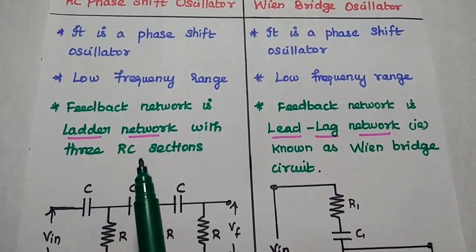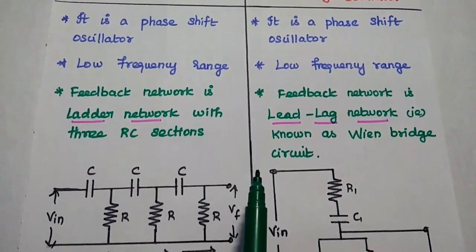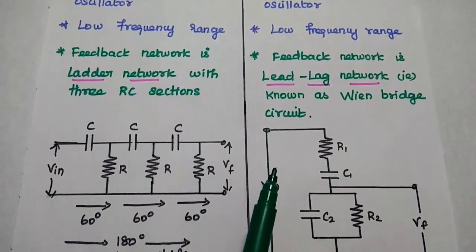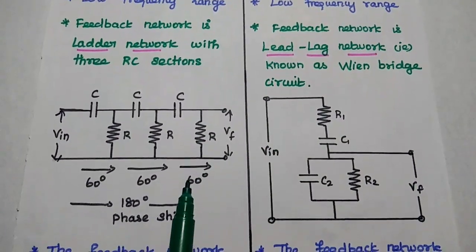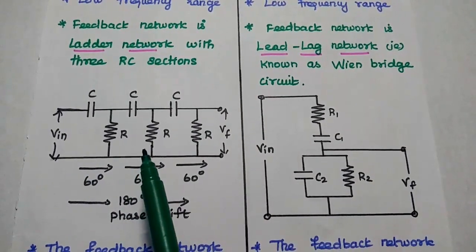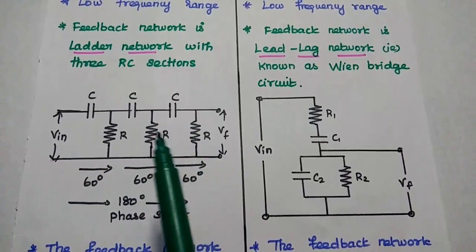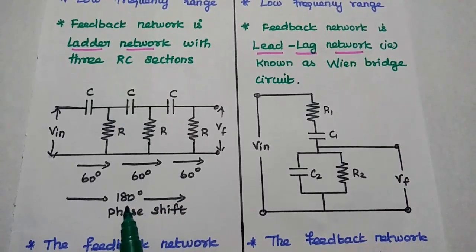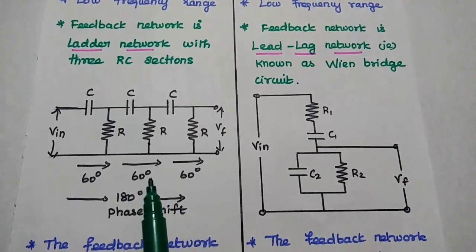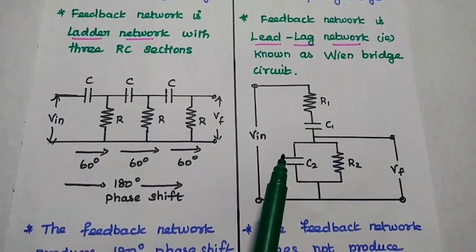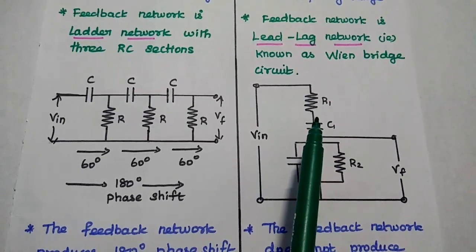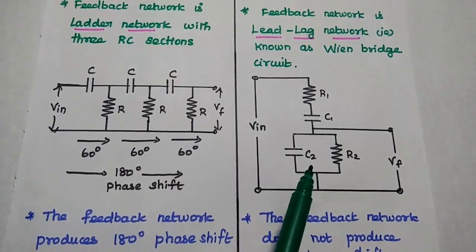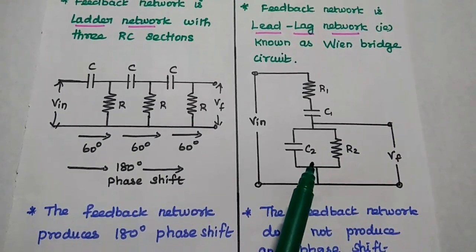In the RC phase shift oscillator, the feedback network is a ladder network with three RC sections. In the Wien bridge oscillator, the feedback network is a lead-lag network known as the Wien bridge circuit. The Wien bridge circuit has a series arm consisting of R1 and C1 in series, and a parallel arm consisting of C2 and R2 in parallel.